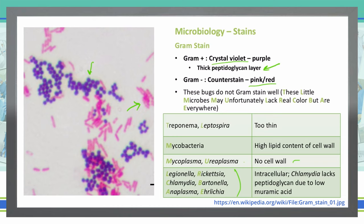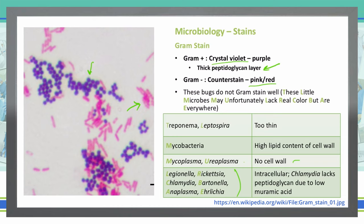There's a mnemonic to help remember which bacteria don't stain well: 'These Little Microbes May Unfortunately Lack Real Color But Are Everywhere.' Each word corresponds to the first letter of each bacterium — T for Treponema, L for Leptospira, M for Mycobacteria, and so on. These particular organisms do not gram stain well, so we cannot rely on a gram stain to identify them.